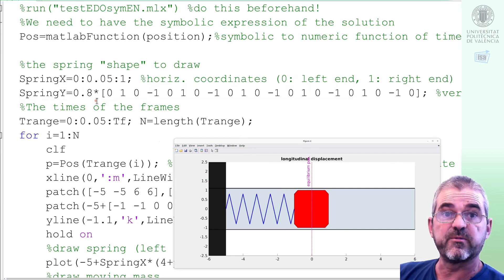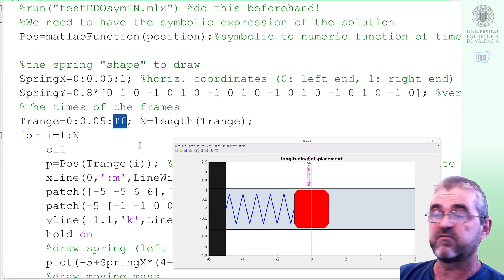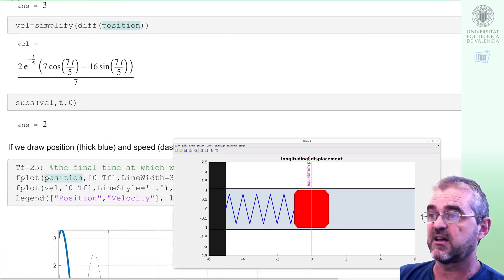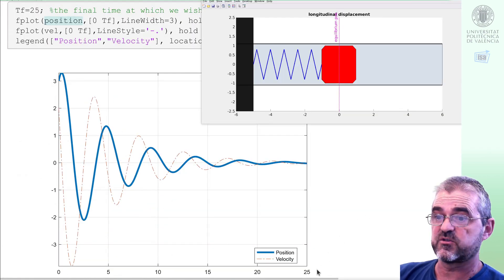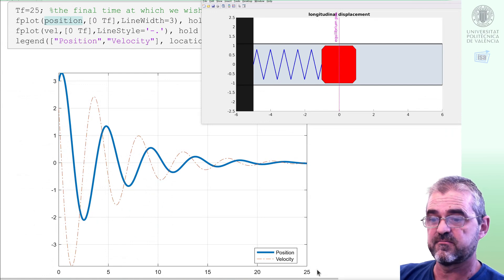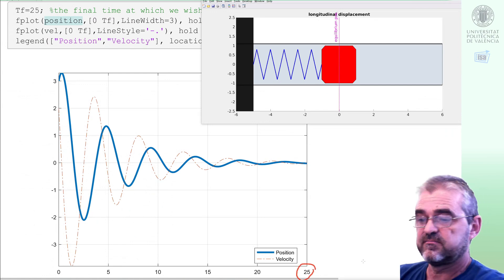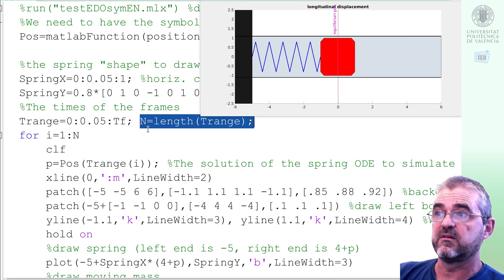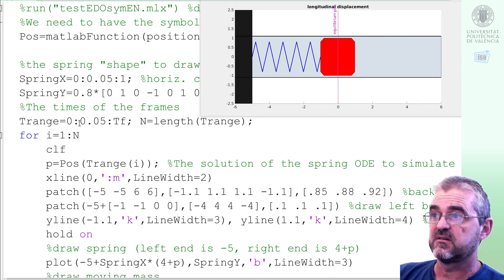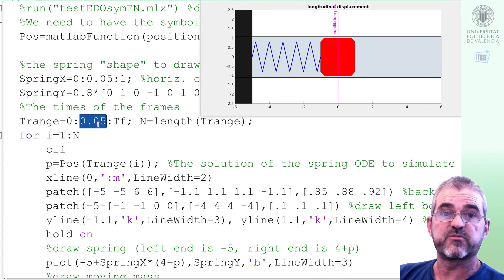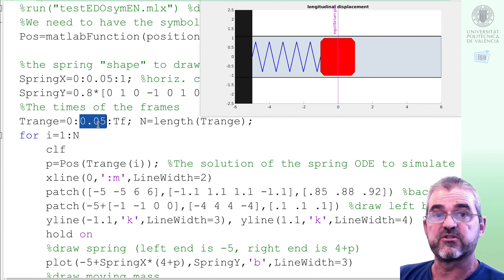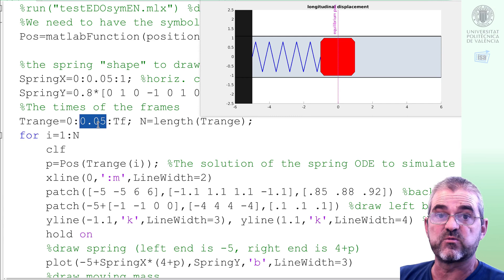TF is also a variable in the workspace that I used as final time in this time response plots in the previous video. It was 25 seconds. And I will present capital N frames, each frame corresponding to a separation of 0.5 seconds. So if this were real time, this would be prepared to render 20 frames per second.